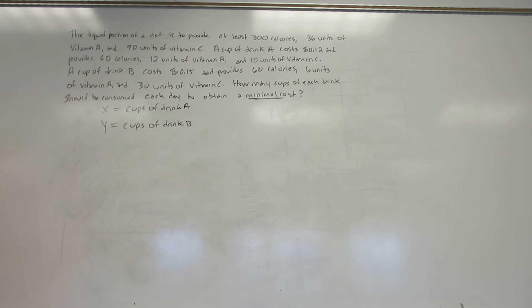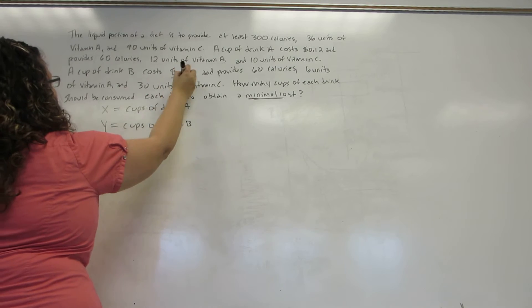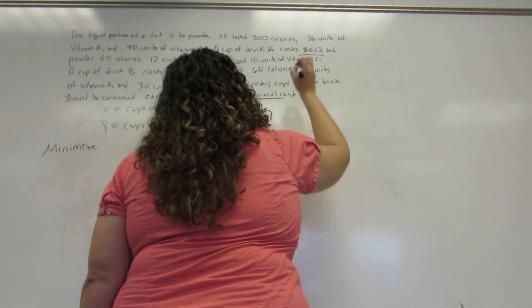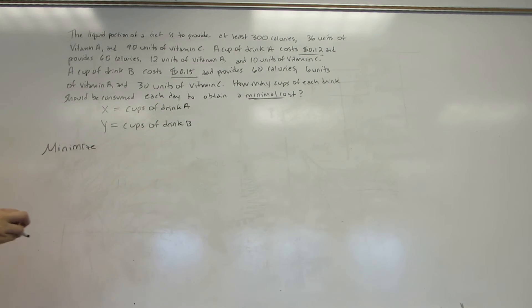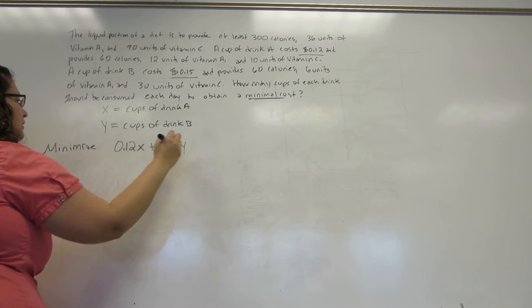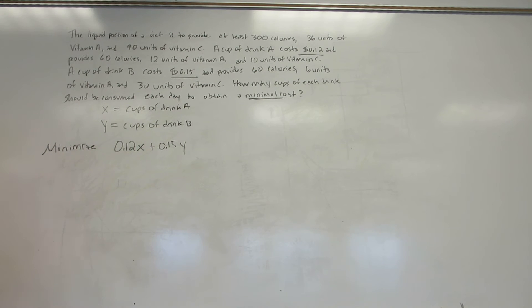Now I'm going to start formulating the problem mathematically. I'm wanting to minimize the cost. I look through here and look for anything relating to cost. It tells me that drink B costs 15 cents per cup and drink A costs 12 cents per cup. So the total cost will be 12 cents times how many cups of drink A and 15 cents times however many cups of drink B.